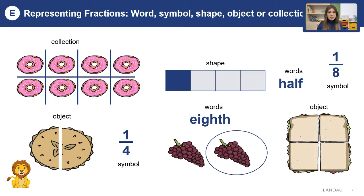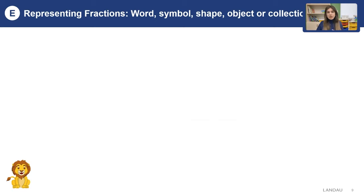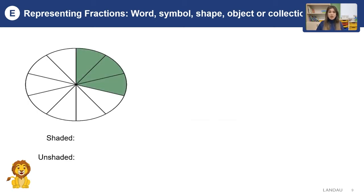If you have any questions, please pause this video and watch this part again. Now we will work on symbols and shapes. What can you see in the picture? There are some shapes and we will work on the shaded and unshaded parts. Let's start with the first part — how many parts can you see? We can see ten slices, ten parts. How many parts are shaded? Just three parts are green or colored, so we can write it as three over ten. What about the unshaded part? There are just seven unshaded parts, so we can write it as seven over ten.